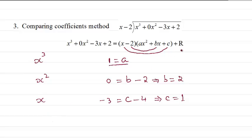Then to find r, we compare the constant term. Left-hand side is just 2. The constant term will come from when we multiply this minus 2 to c. So that's minus 2 times 1, which is minus 2. And also r is constant. So if you solve here, we'll get r equal to 4.